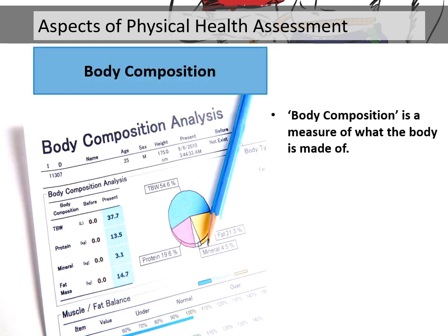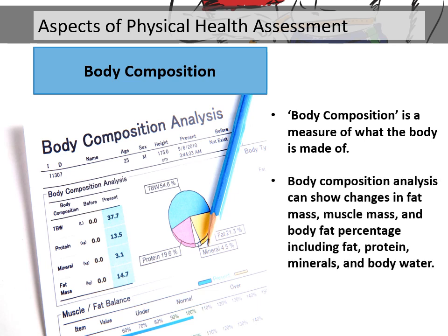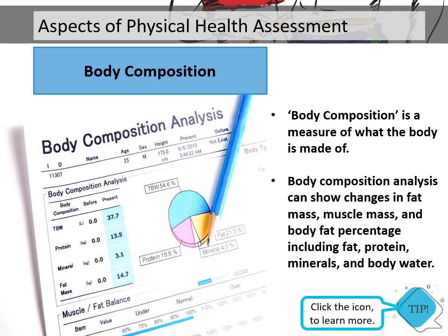Body composition is a measure of what the body is made of. Body composition analysis can show changes in fat mass, muscle mass, and body fat percentage, including fat, protein, minerals, and body water.